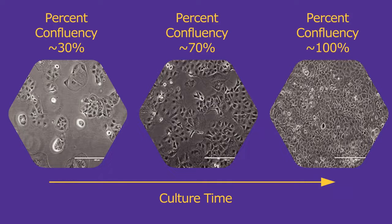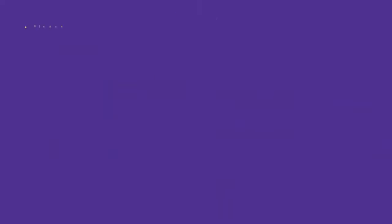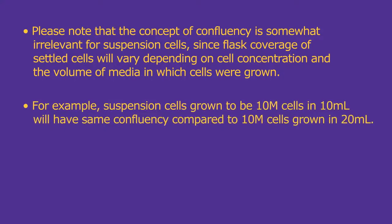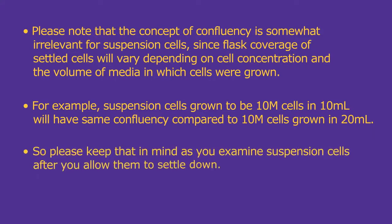Usually we target around 80% surface coverage or confluency before trypsinizing and passaging a fraction of cells into a new flask. In the next video we'll cover cell passaging steps in more detail. Please note that the idea of confluency is somewhat irrelevant for suspension cells, since flask coverage of settled cells will vary depending on the concentration of cells and the volume of media. For example, suspension cells grown to 10 million cells in 10 milliliters will have the same confluency as 10 million cells grown in 20 milliliters. So please keep that in mind as you examine suspension cells.